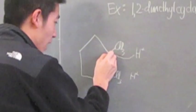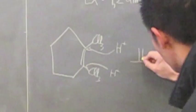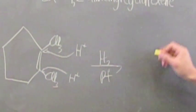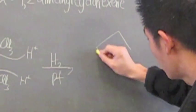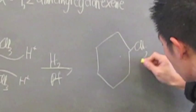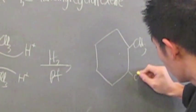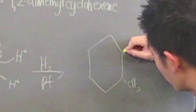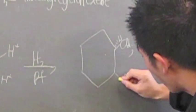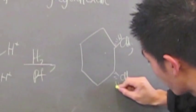These hydrogens are added by a syn-stereochemistry to give you, with hydrogen and platinum in the solvent, 1,2-dimethylcyclohexane, with hydrogens being added by a syn-stereochemistry.